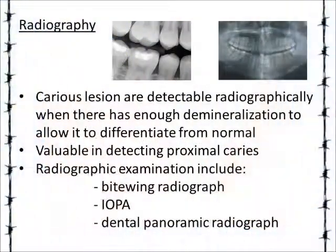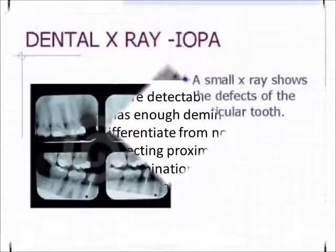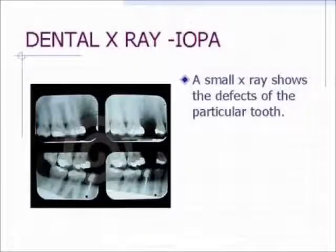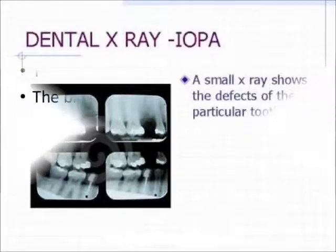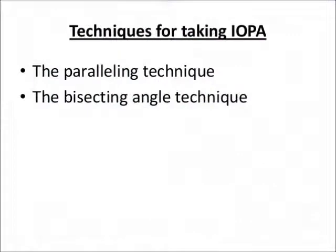First is the intraoral periapical radiograph. IOPA is a small x-ray that shows defects of particular teeth, and there are two techniques for taking the IOPA: the paralleling technique and the bisecting angle technique.